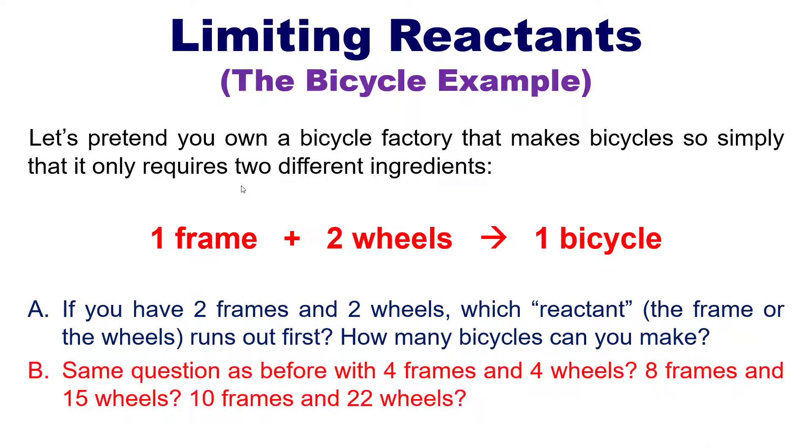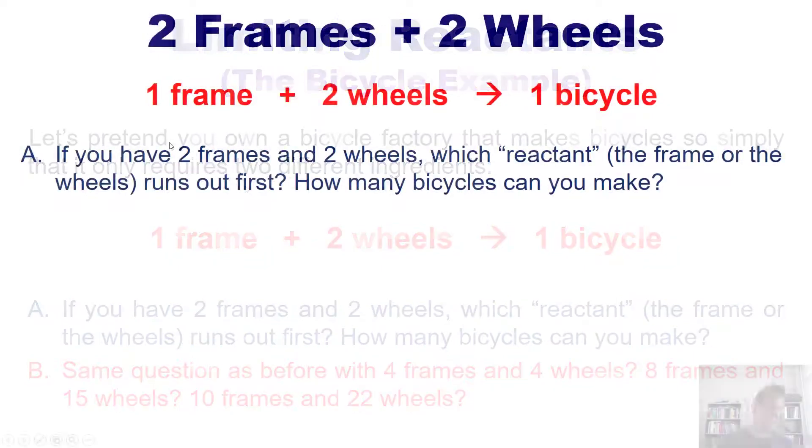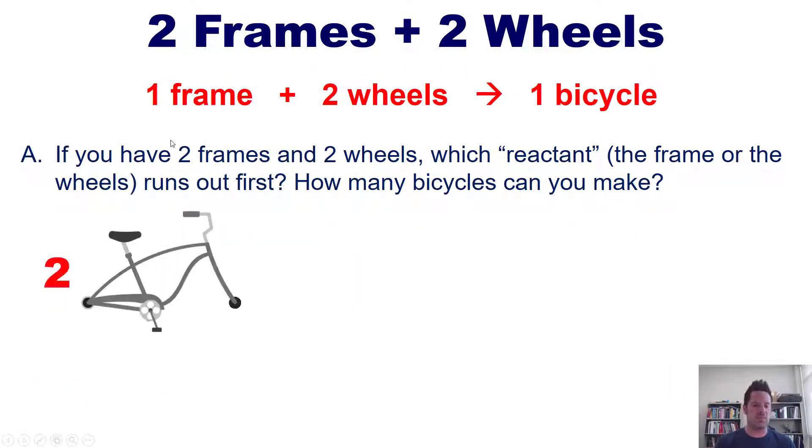By extension, same question as before except with four frames and four wheels. And after that, what would happen if you had eight frames and fifteen wheels? Or ten frames and twenty-two wheels? Let's begin by taking a look at question A. In that scenario, you have two frames and two wheels. Which of these reactants would run out first and how many bicycles would you end up making?